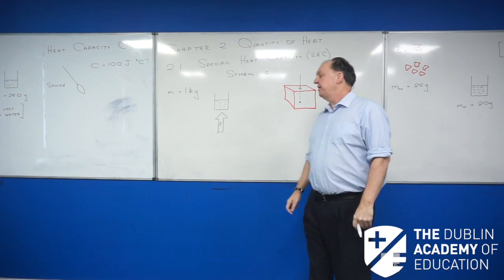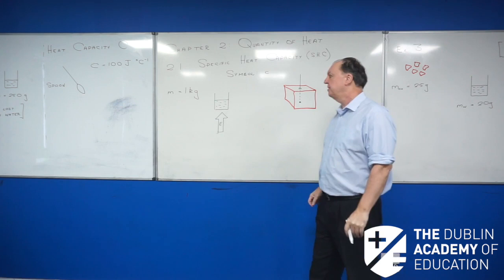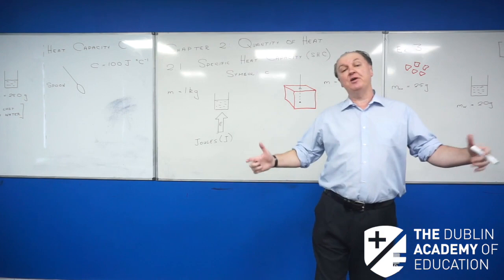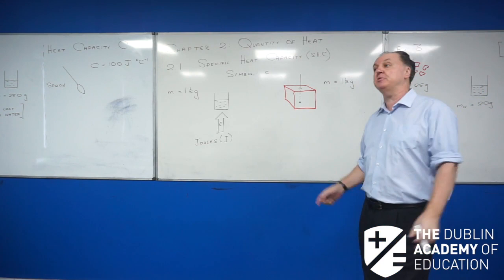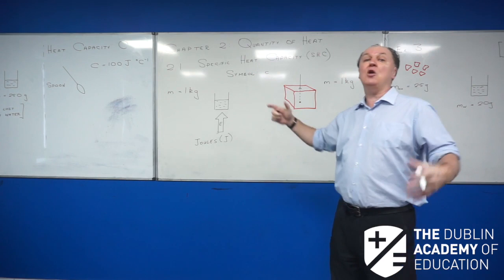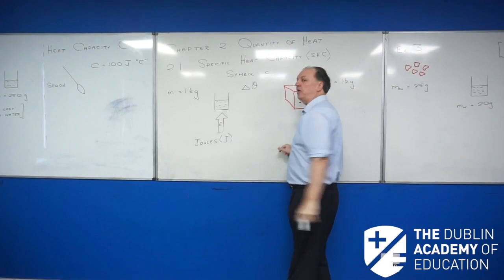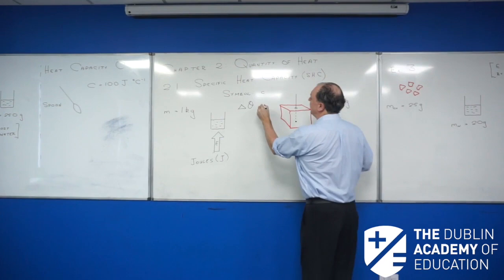Now I'm going to add heat to those — add heat to the water. Heat energy is measured in joules, J. I want to raise the temperature by exactly one degree Celsius. I don't care what the starting temperature is. The change in temperature is called delta, and the symbol I'm going to use for temperature is theta. So I want delta theta to be one degree Celsius in each case.